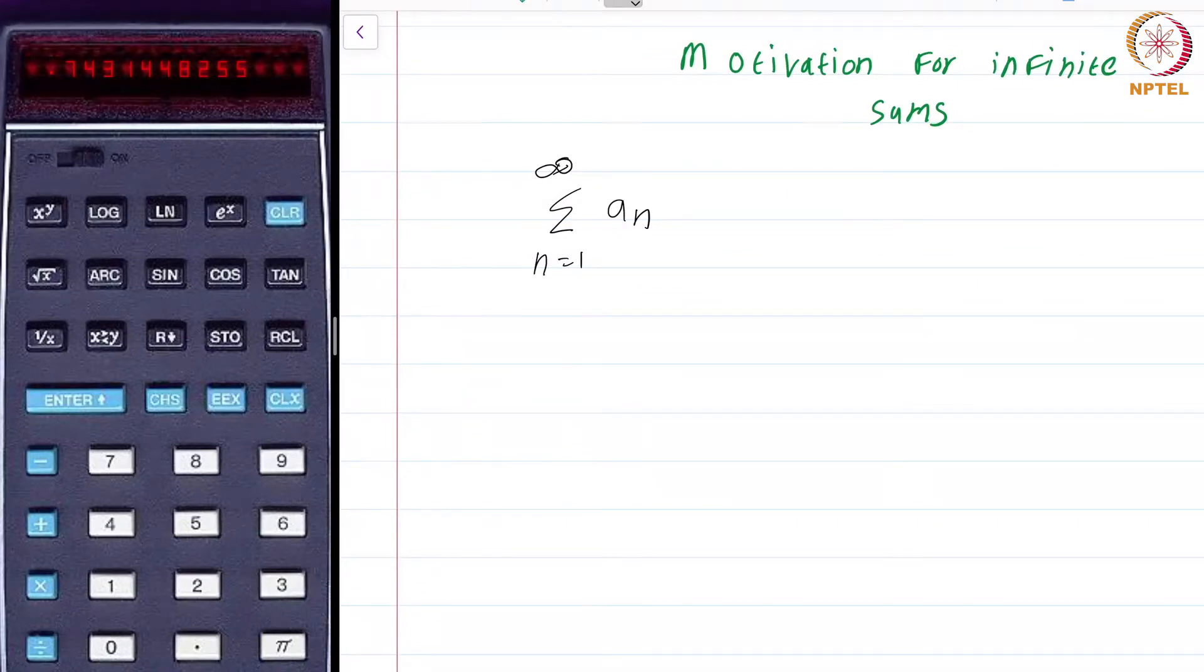This calculator launched in 1972 and believe it or not, this calculator probably had just a few kilobytes of memory. I leave it to you to check that if it had actually stored the values of sine up till 10 digit precision, it is simply not possible to store all the values in just a few kilobytes of total available storage.